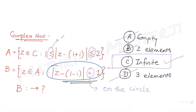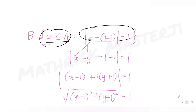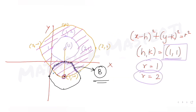If it were less than, the region would be inside the circle. Since set A's condition says mod of z minus (1 + i) between 1 and 2, those are all points in the annular region. All points common to set A and lying on the circle of set B form an infinite set — so option C is the correct answer.